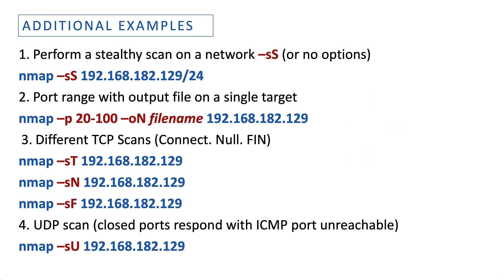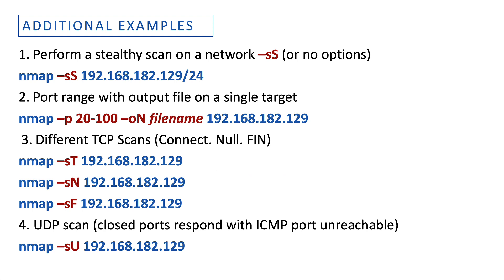The -oN option allows you to direct the output into a file. There are different TCP scan flags: -sN, -sF, -sP, and so on. The -sT option, called the TCP connect scan, is similar to -sS but completes the three-way handshake to make it less suspicious. To perform a UDP scan you use the -sU option. You can use any combination of these scans depending on your needs.